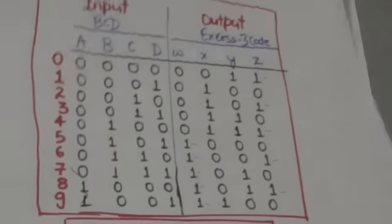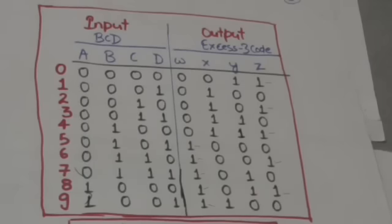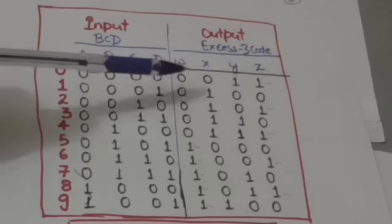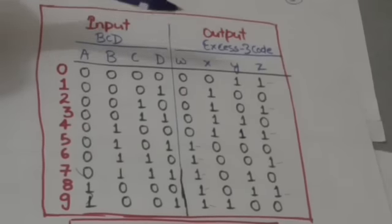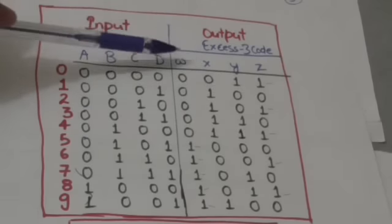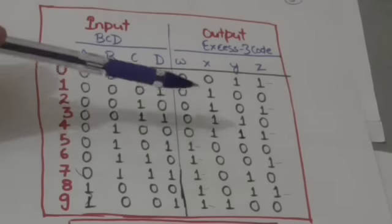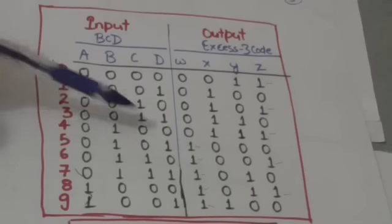So in BCD, a decimal digit is represented by a four-bit binary number whose decimal value is equivalent to that decimal digit. But in Excess-3 code, a decimal digit is represented by a four-bit binary number whose decimal value is 3 more than that decimal digit. Now we have to obtain boolean functions for output variables W, X, Y, and Z. First we will obtain the boolean function for output variable W.